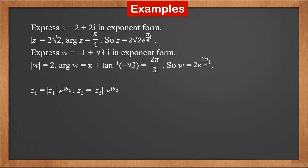With the exponential form, it's easier to see what happens to the modulus and argument when we multiply or divide two complex numbers. Z1 is z1's modulus times e to i theta 1, and z2 is z2's modulus times e to i theta 2. So z1 times z2 is z1's modulus times z2's modulus times e to i theta 1 times e to i theta 2, which equals z1's modulus times z2's modulus times e to i(theta 1 plus theta 2). When we multiply two complex numbers, we multiply their moduli and add their arguments.